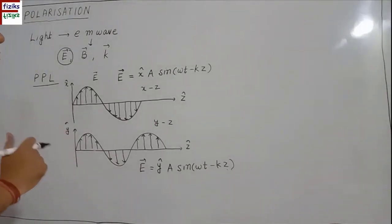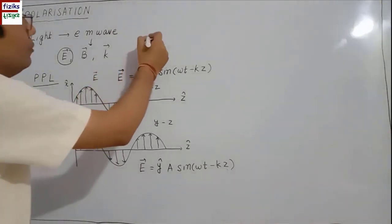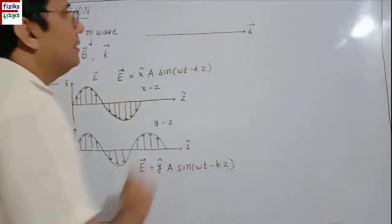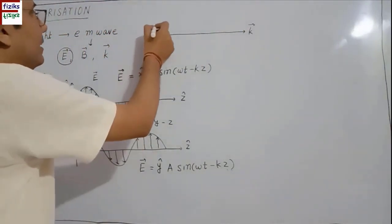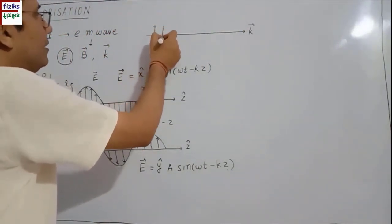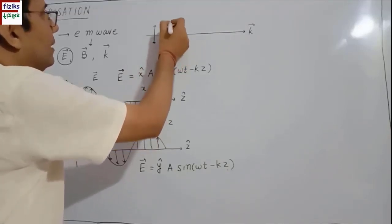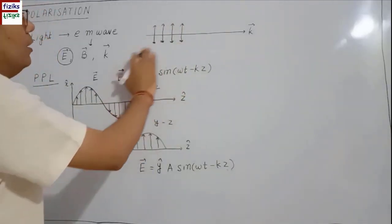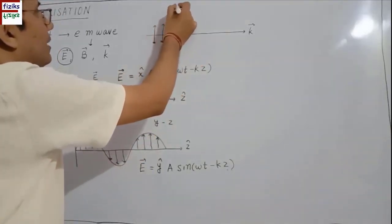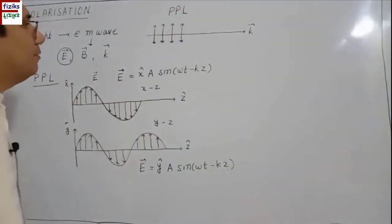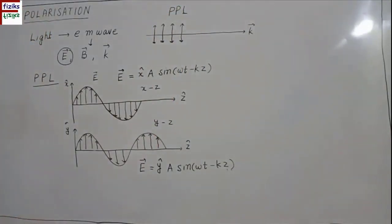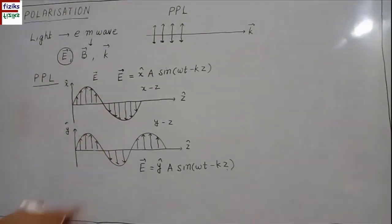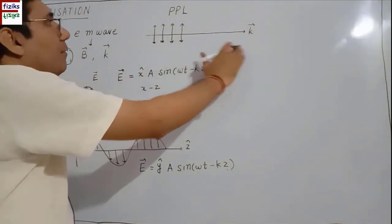A question arises: how will we denote plane polarized light? Basically, first we will draw a line which will represent the K vector. The electric vectors are perpendicular to this K vector, so they will be shown by these arrows. Here they are confined — these electric vectors are confined in the plane of this board. So this is the representation of plane polarized light. In plane polarized light, electric vectors are confined in a plane and this plane consists of the K vector.